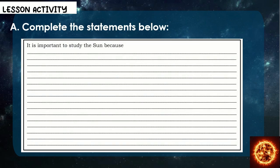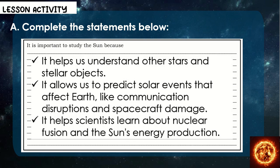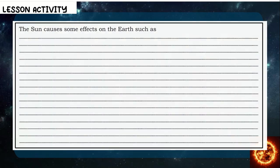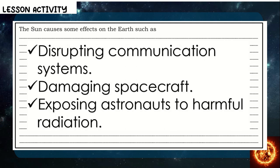Complete the statements below. It is important to study the sun because: it helps us understand other stars and stellar objects; it allows us to predict solar events that affect Earth, like communication disruptions and spacecraft damage; and it helps scientists learn about nuclear fusion and the sun's energy production. The sun causes some effects on the Earth, such as disrupting communication systems, damaging spacecraft, and exposing astronauts to harmful radiation.